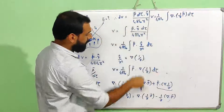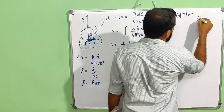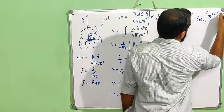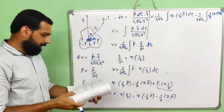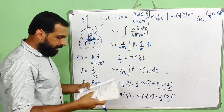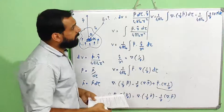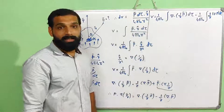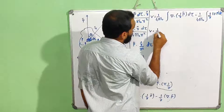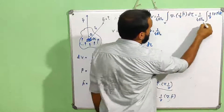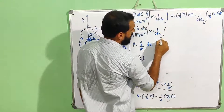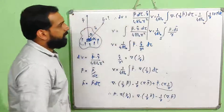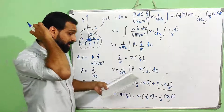V equals 1 by 4 pi epsilon 0 integral of del dot (1/r into P) d-tau, minus 1 by 4 pi epsilon 0 integral of (1/r) del dot P d-tau. Applying the Gauss divergence theorem to the first term: the divergence theorem converts the volume integral to a surface integral, giving P dot dS by R.